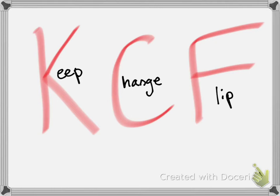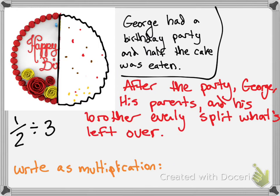I like to call it 'Kentucky Chicken Fried' to help myself remember. So yes, it stands for keep, change, flip. Let's look back at this. We keep our first fraction — we keep it as one-half. We're going to change our division sign; the opposite of division is multiplication — they are inverses of one another. And then we're going to flip.